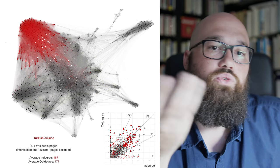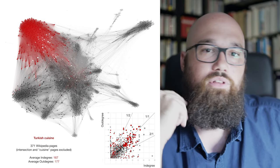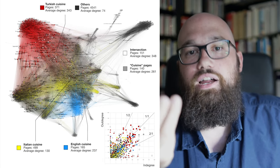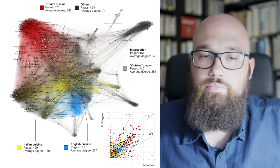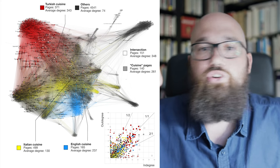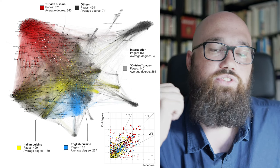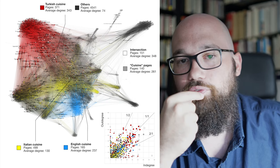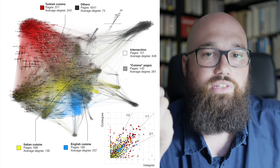And where it skews a bit the comparison between these three colorful clusters here is the fact that the gray cluster, the one with these national cuisine pages, is of course connected to almost all the pages of all these sub-networks. So that means that in terms of network analysis or graph metrics, there is not much to be extracted here.